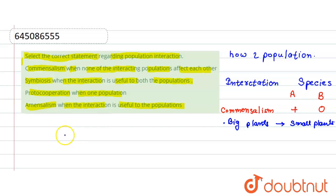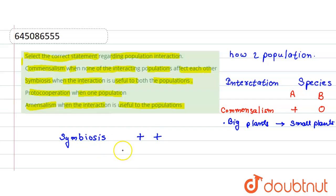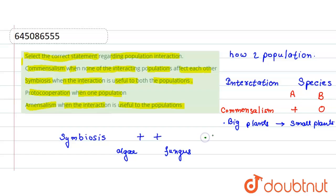Second, symbiosis - also known as mutualism. In this, both species are benefited, denoted by plus-plus. An example is algae and fungus: the algae provides nutrients to the fungus, and the fungus provides protection to the algae. Both are getting benefited, which is why it is called symbiosis or mutualism.